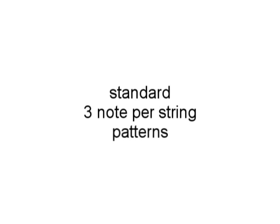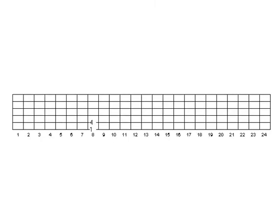You want to be able to visualize these shapes not only vertically up and down a set of strings, but also horizontally going across the strings. To conclude, we're going to use these two two-note shapes to construct standard three-note-per-string patterns for the major scale or Ionian Mode. Most of you may be familiar with these patterns already. Here's three-note-per-string pattern one, starting on the root of the scale — in this case C, eighth fret, low E. This pattern consists entirely of perfect fourth shapes.